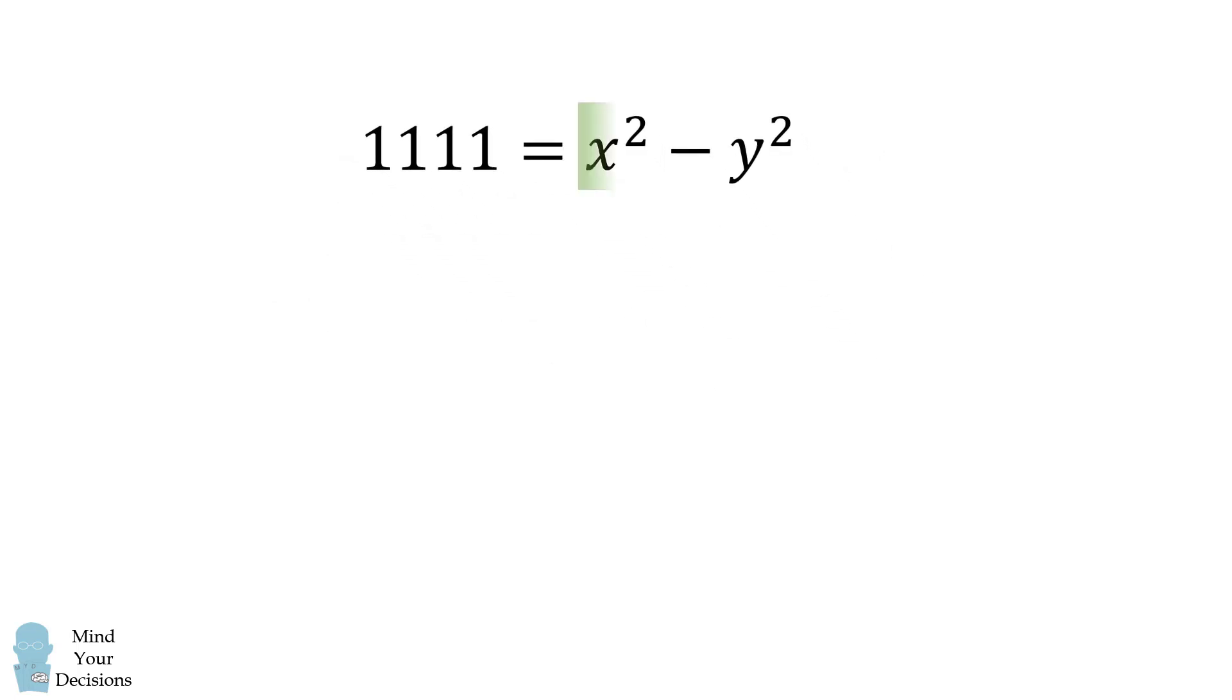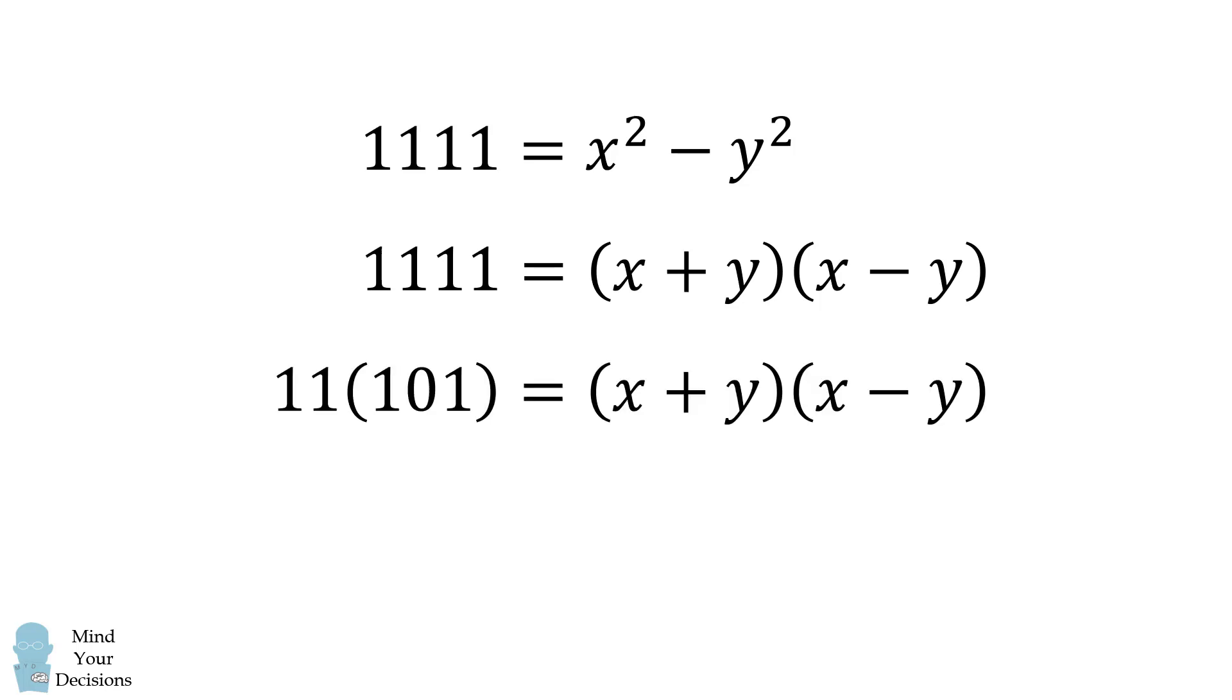From here, we can use the difference of squares formula. We'll factor the right-hand side. It'll be equal to the quantity x plus y, multiplied by the quantity x minus y. We can then factor 1111, and that's equal to 11 multiplied by 101.